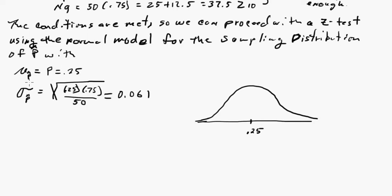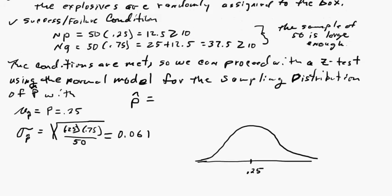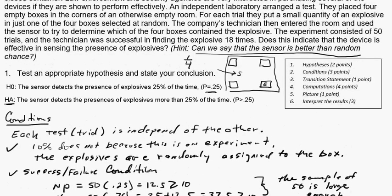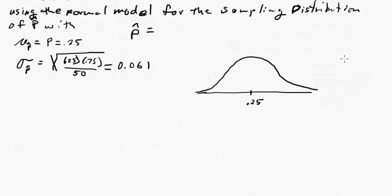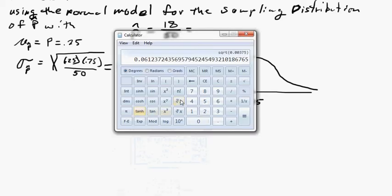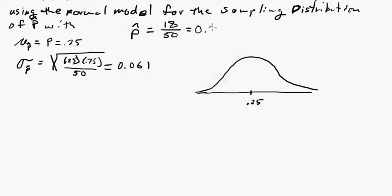Now, what did we get for p-hat? The sensor worked 18 times, so p-hat equals 18 out of 50. Double-checking: 18 divided by 50 equals 0.36. So p-hat is 0.36, which looks better than the hypothesized 25%.